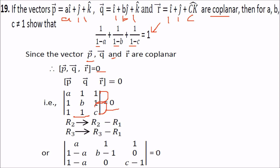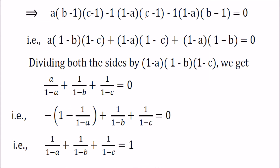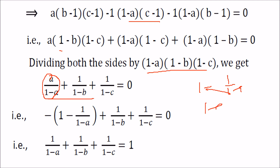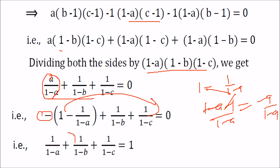Solving the determinant gives an equation. Dividing throughout by (1-a)(1-b)(1-c), and rewriting terms: a/(1-a) can be written as [1-(1-a)]/(1-a) = -1 + 1/(1-a). Placing the negative signs and taking 1 to one side, you get the required identity.